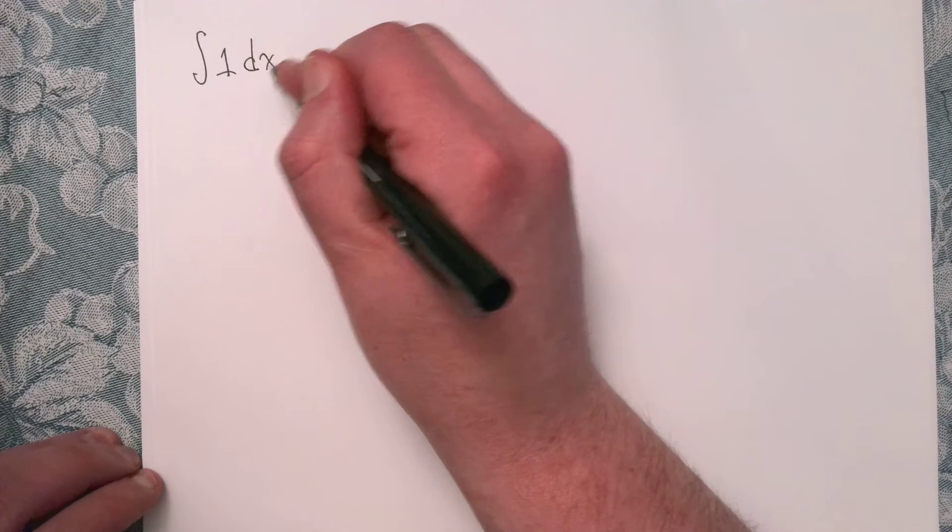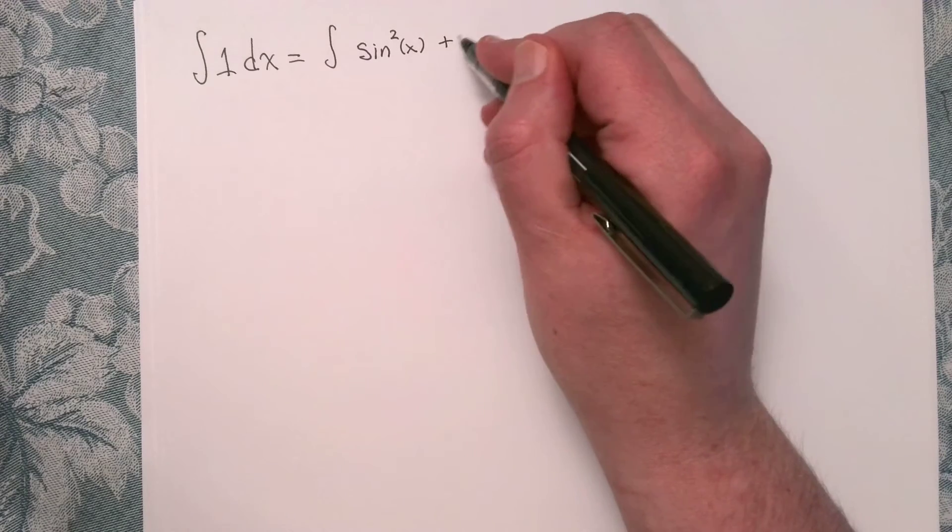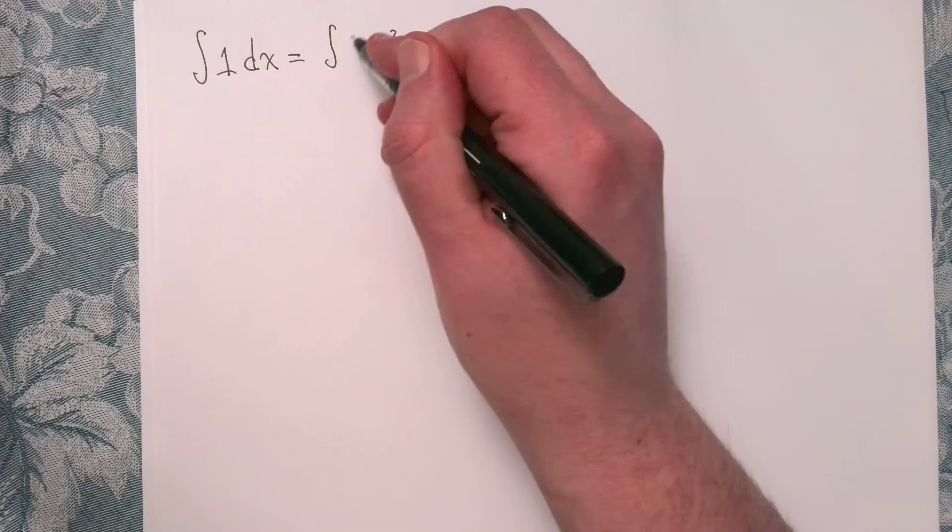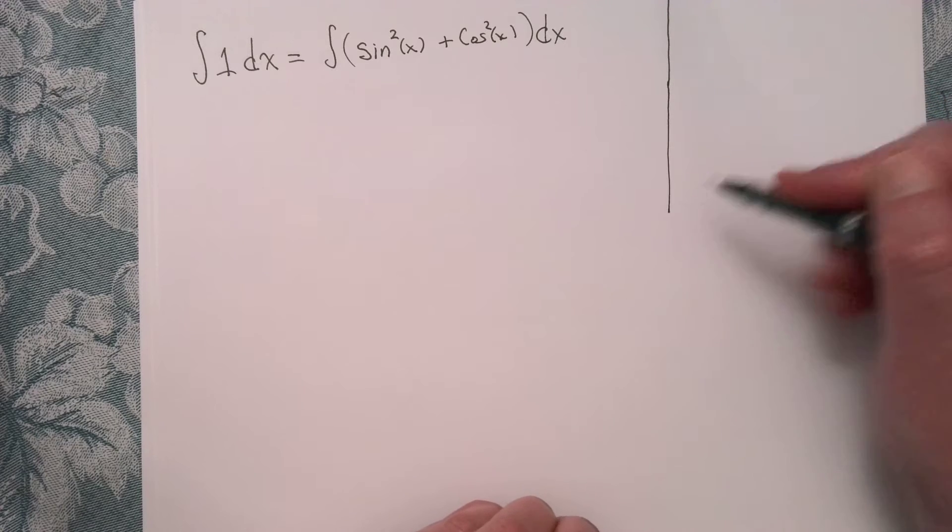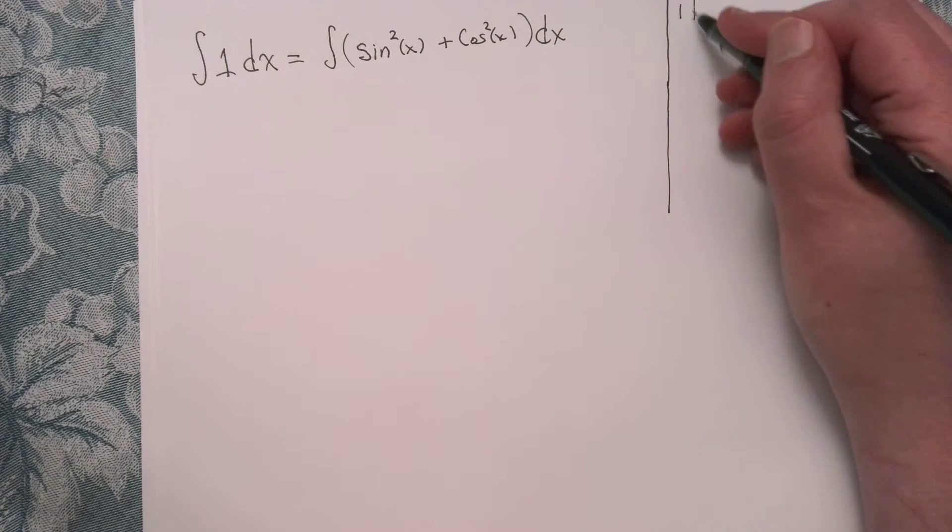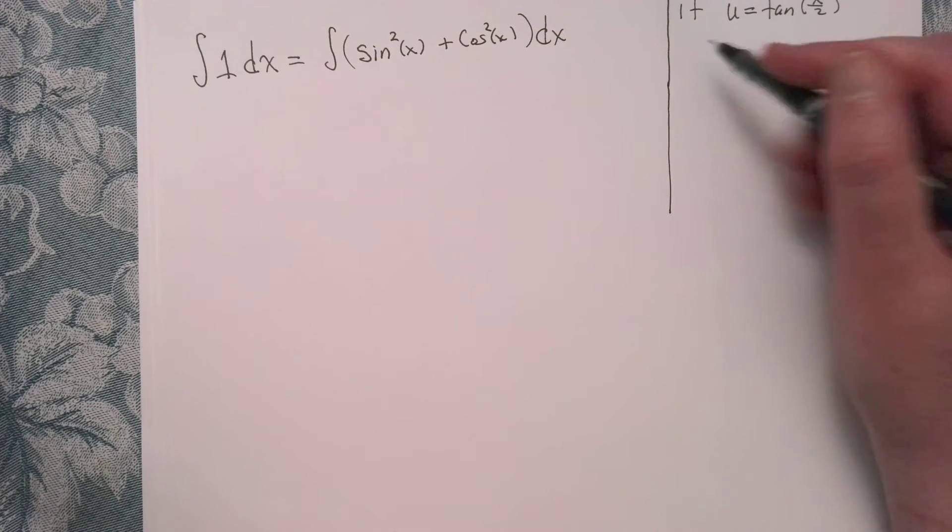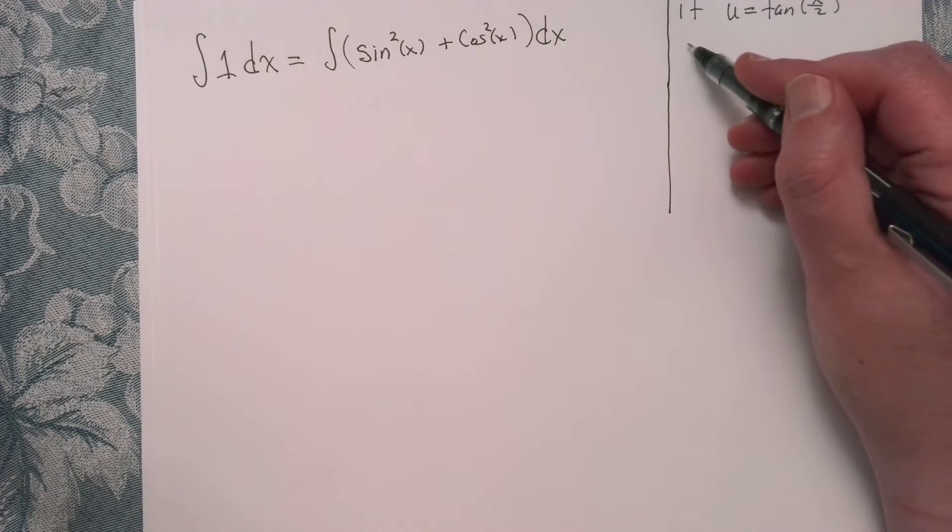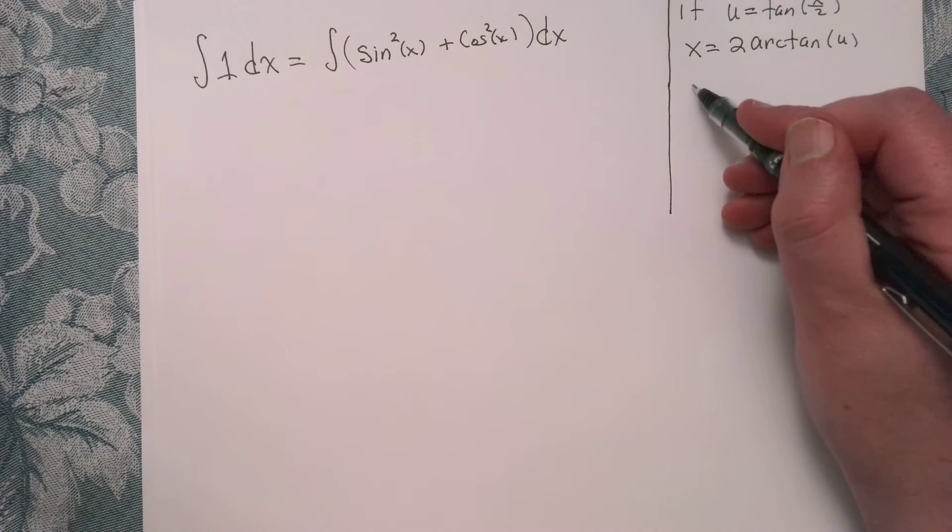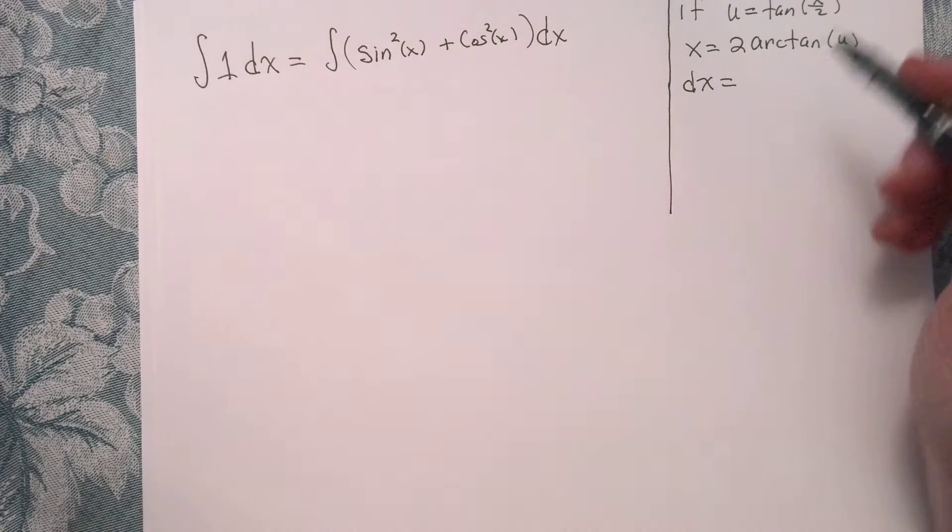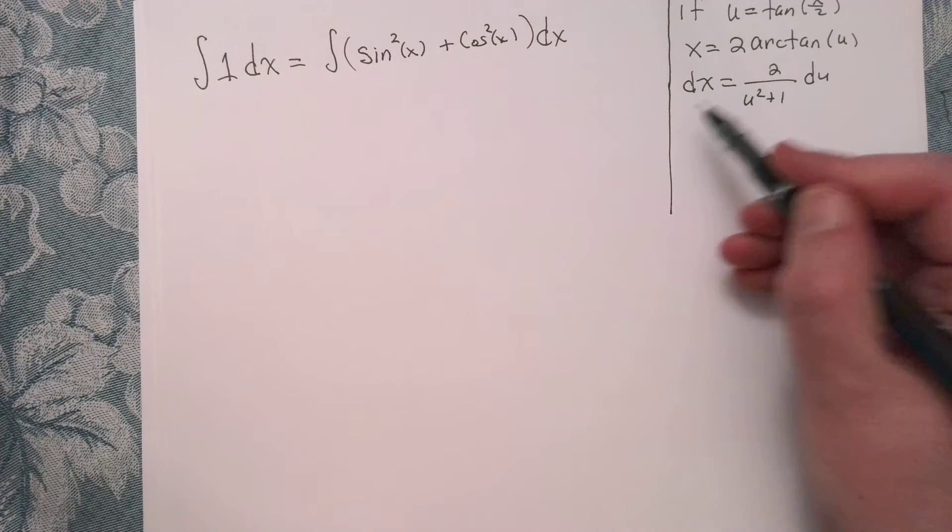Okay, so the integral of 1 dx, this is exactly the integral of sine squared of x plus cosine squared of x dx. And so taking inspiration from Weierstrass, we know that if u is equal to the tangent of x over 2, then we have the following. So then we have that x is equal to 2 times the arctangent of u, and then we know that dx, which we're going to need, right? So dx is exactly 2 over u squared plus 1 du. Okay, so that seems nice.